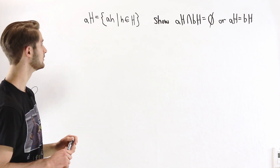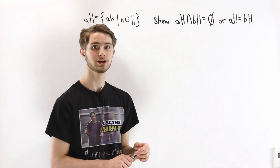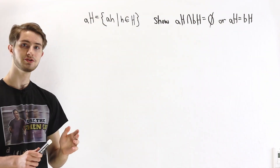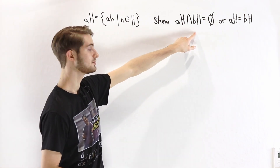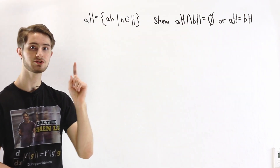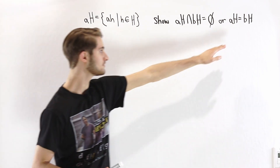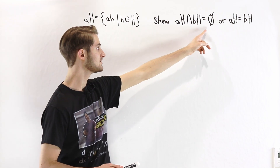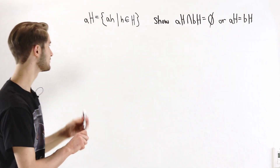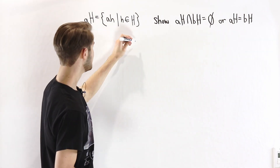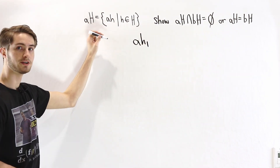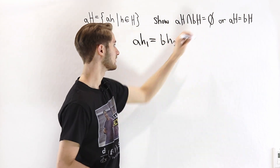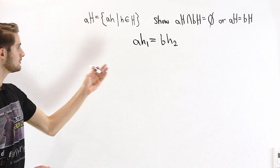We're going to first show that for two cosets aH and bH, either they don't intersect at all or they are equal. In order to do that, let's suppose that we have two cosets that intersect at at least one element, and we'll show that that means they must be equal to each other. So if aH and bH intersect at at least one element, then there's going to be some aH1, some element of this coset, that's equal to bH2, which is in our second coset.